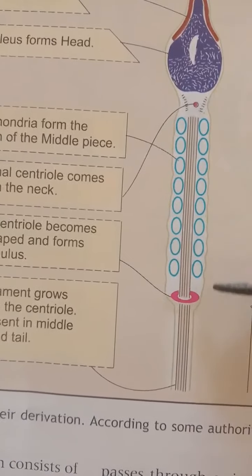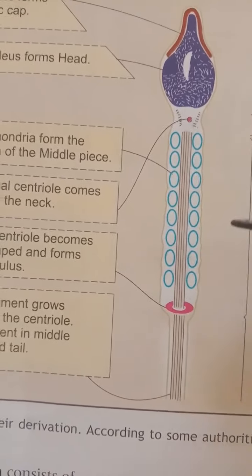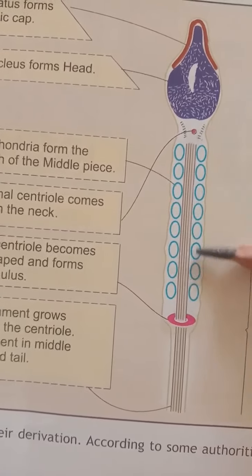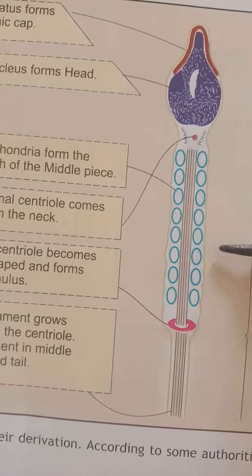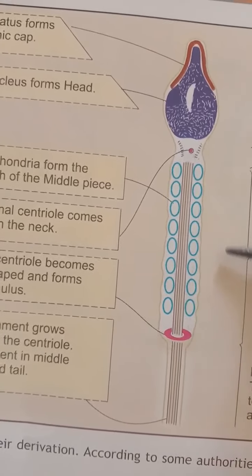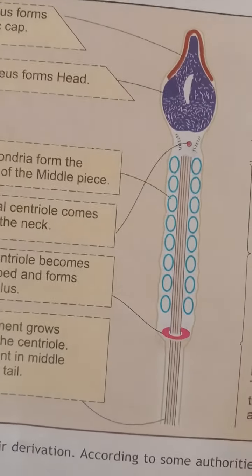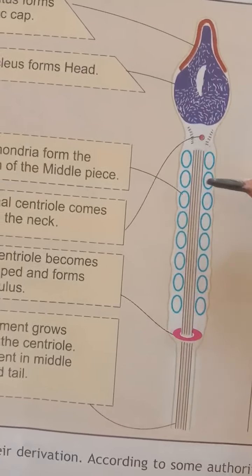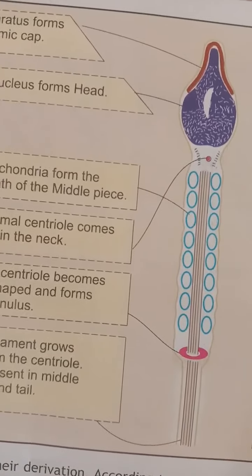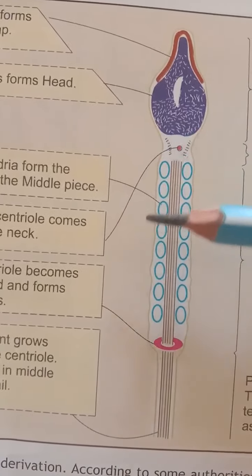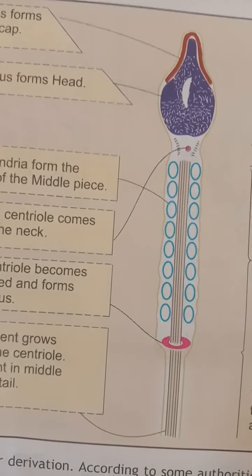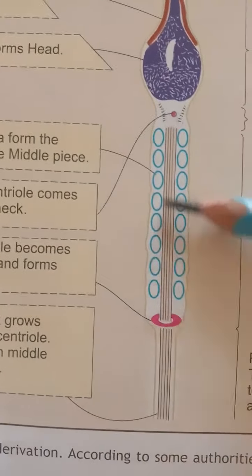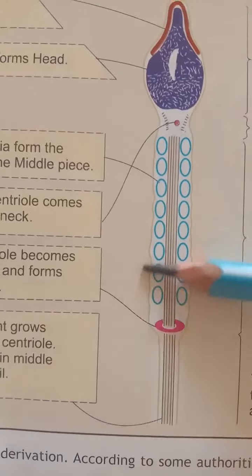The axial filament is actually composed of several fibrils arranged in different layers. There is a pair of central fibrils surrounded by nine pairs of doublets arranged in a circle around the central pair. The whole system of fibrils is kept in position by a series of coverings. Immediately outside the fibrils there is a fibrous sheath, and in the region of the middle piece the fibrous sheath is surrounded by spirally arranged mitochondria. Finally, the entire spermatozoa is enclosed by the plasma membrane.